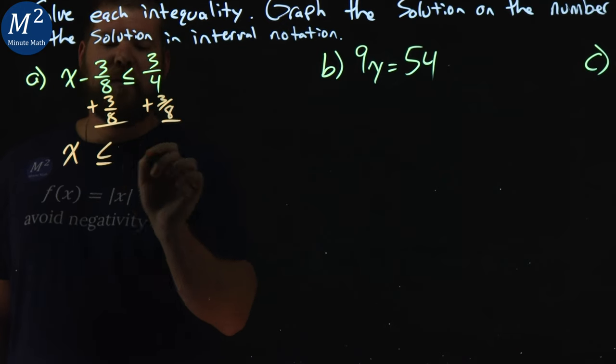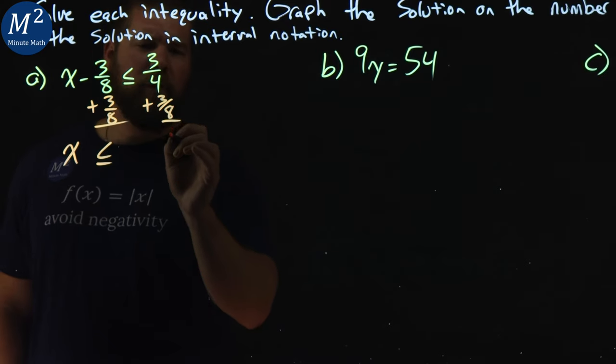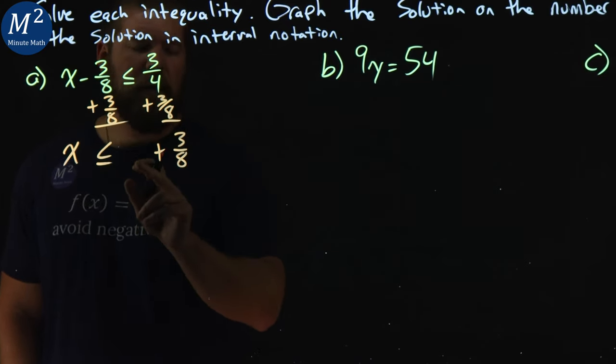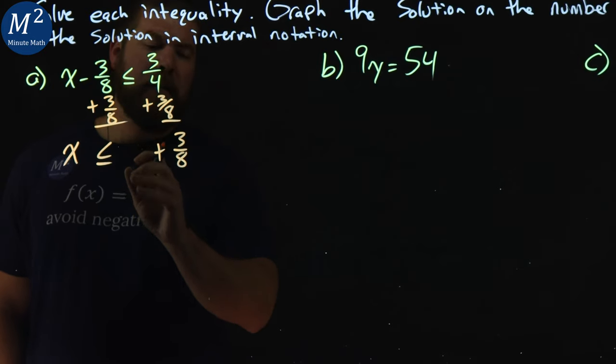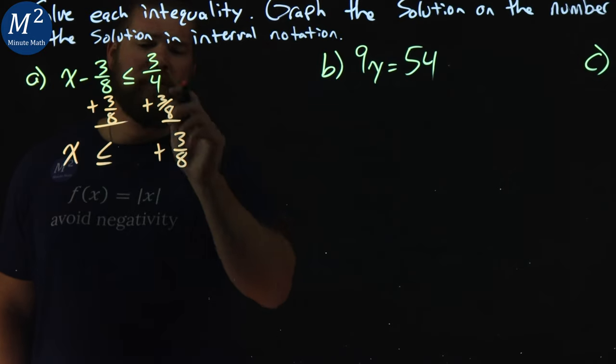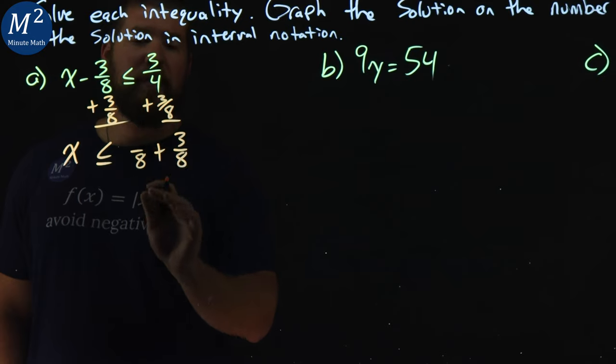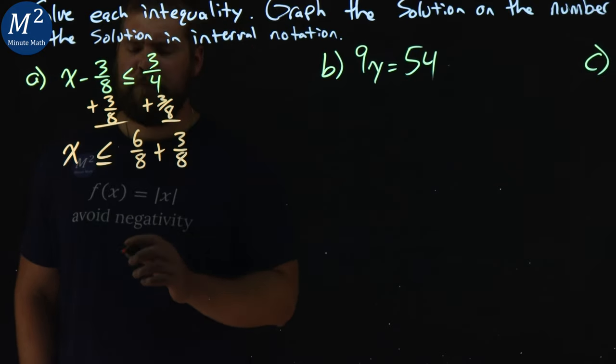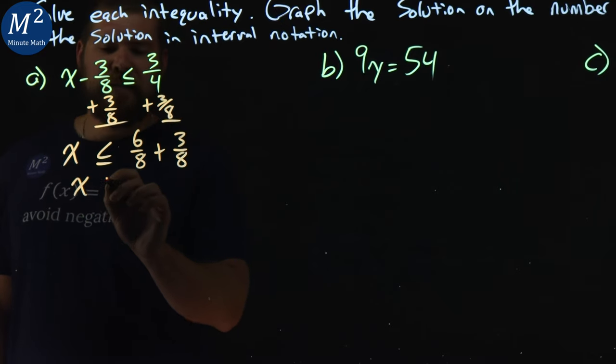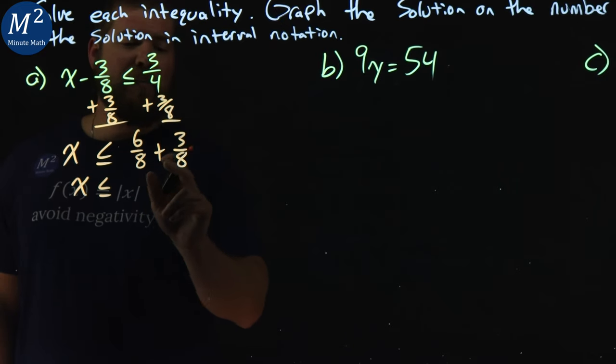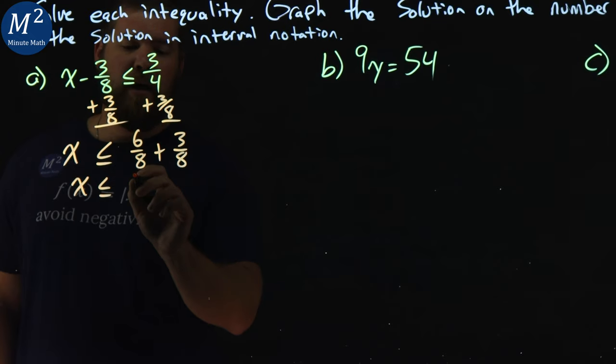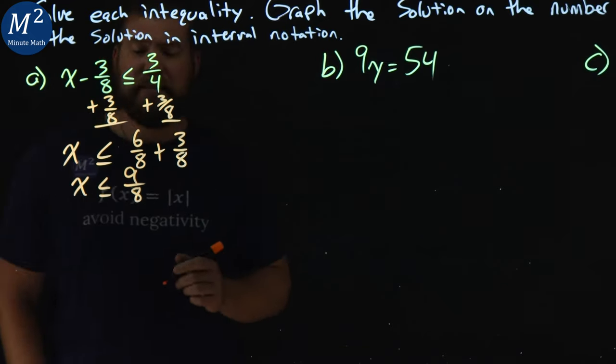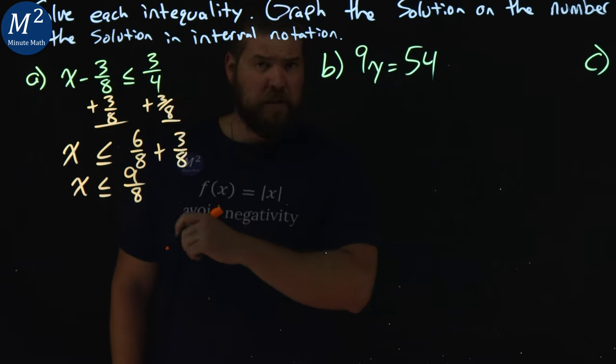So we have x here is less than or equal to, now 3 fourths plus 3 eighths. Notice I didn't put 3 fourths here. We want to have a common denominator when we add fractions, and so 3 fourths is the same as 6 eighths if we put 8 in the denominator. Makes it easier to add. Then we have x is less than or equal to 6 eighths plus 3 eighths, we add the numerator, and 6 plus 3 is 9. Keep the denominator the same to be 8. So we have x is less than or equal to 9 eighths.